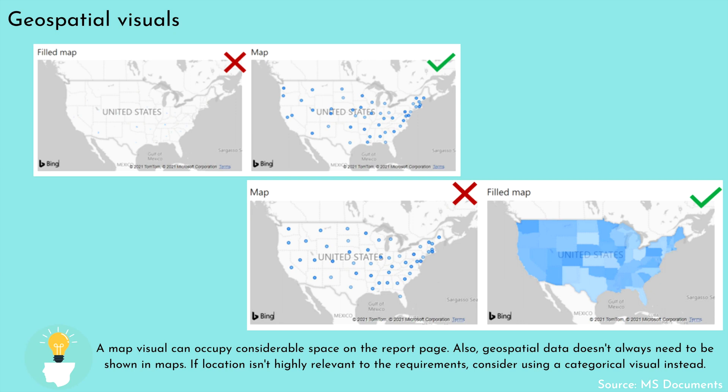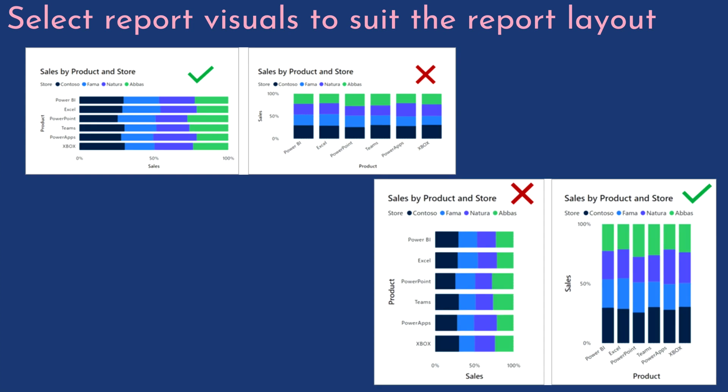When selecting report visuals to suit the report layout, as a report designer you can often choose between multiple visual types to meet your design requirements. To narrow down the selection, choose the visual that best fits the available space on your report page — always consider the space available. Use a visual that is aesthetically pleasing while maximizing use of the available page space. Pay attention to how you want to use a visual on your report and what kind of visual best suits your requirements as well as your page layout.